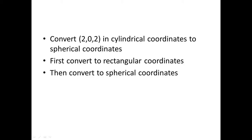The question asks to convert (2, 0, 2) in cylindrical coordinates to spherical coordinates. The way we're going to do this is first we're going to convert to rectangular coordinates, and then after that we're going to convert the rectangular coordinates into spherical coordinates.